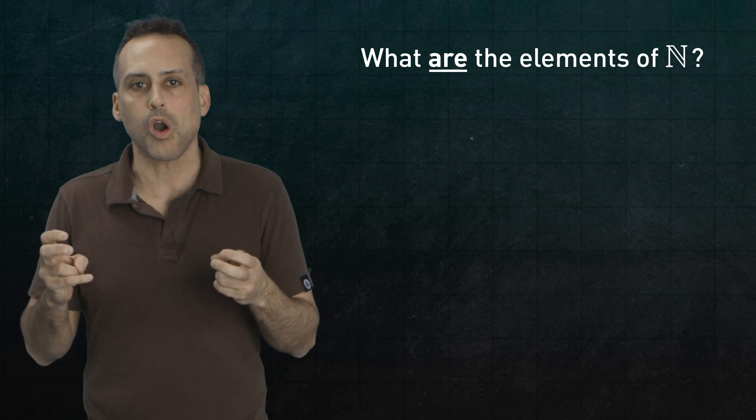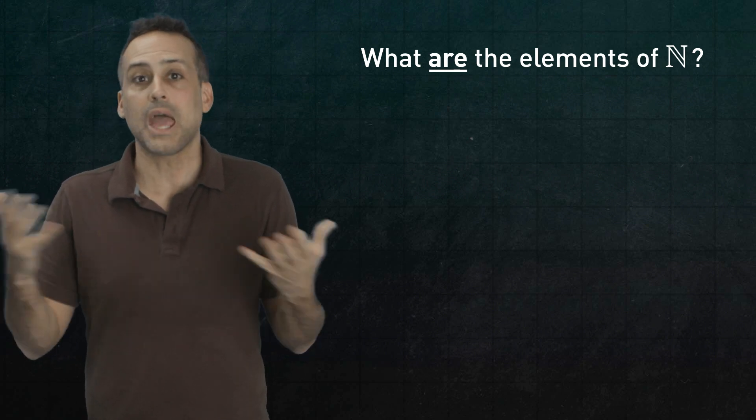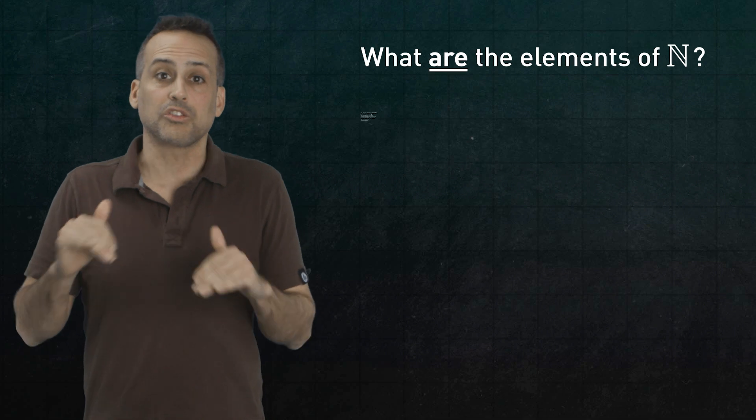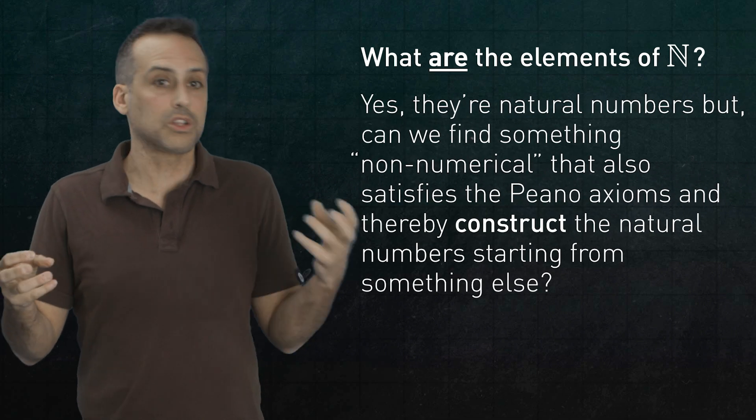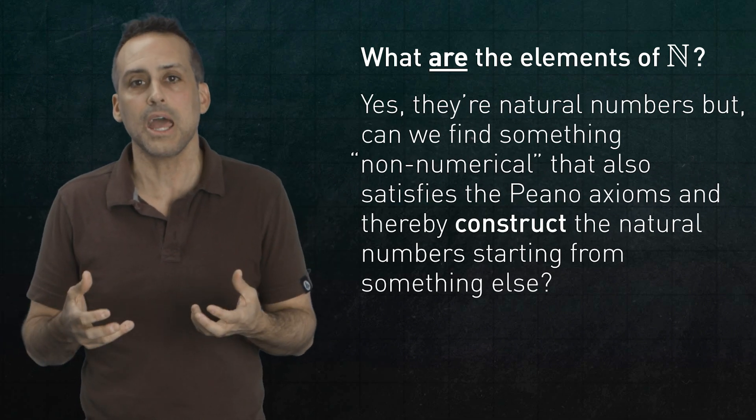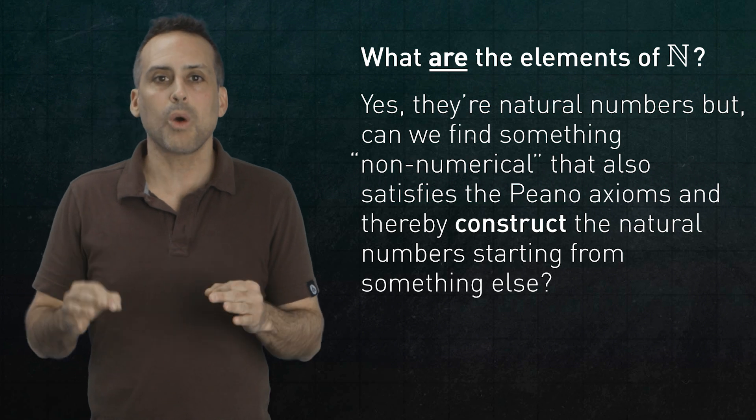Second loose end. We arrived at a notion of successorship, and we built a set that contains entities related to one another by iterated succession. But we never specified what those entities actually were, what Zelda, or Zero, or any other members of n actually are. We just asserted that here's a thing, and here's some other things, and they're all in this set n.